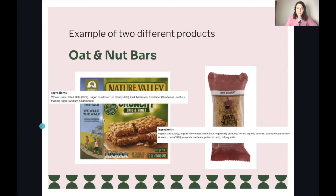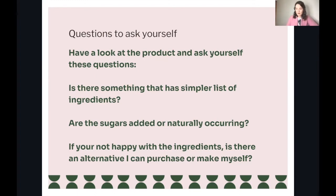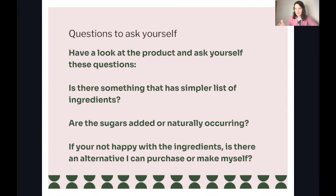I've also got some questions you can ask yourself next time you're at the supermarket looking at which product to buy. Is there something with a simpler list of ingredients? That oat milk example was a good illustration of that. Of course, there are more factors to consider — if you've got four ingredients but the first one is sugar, maybe it's not so good — but in general, simpler ingredients is a good starting point.